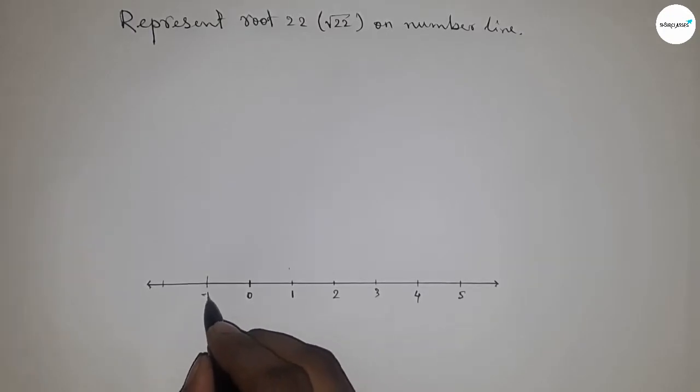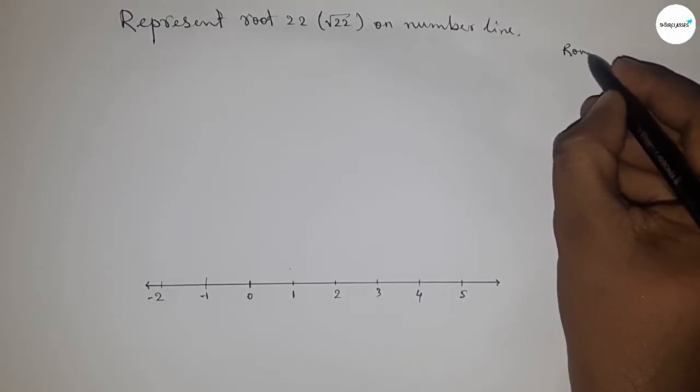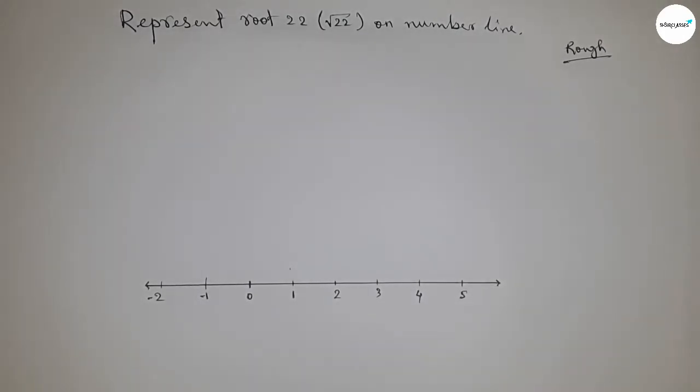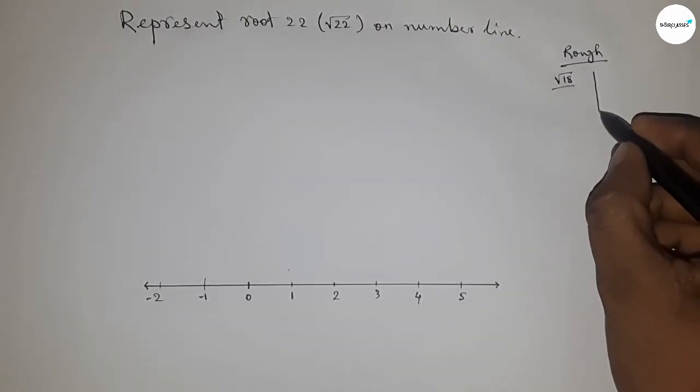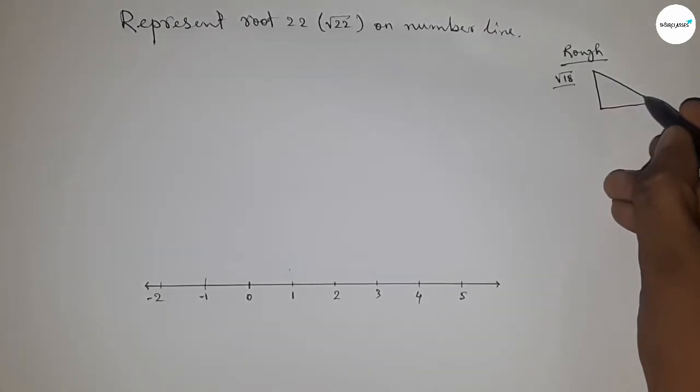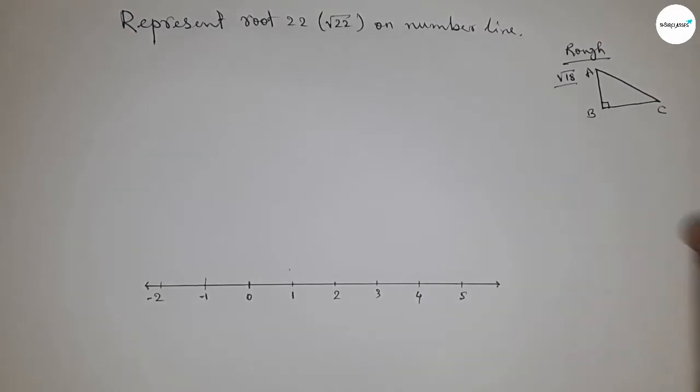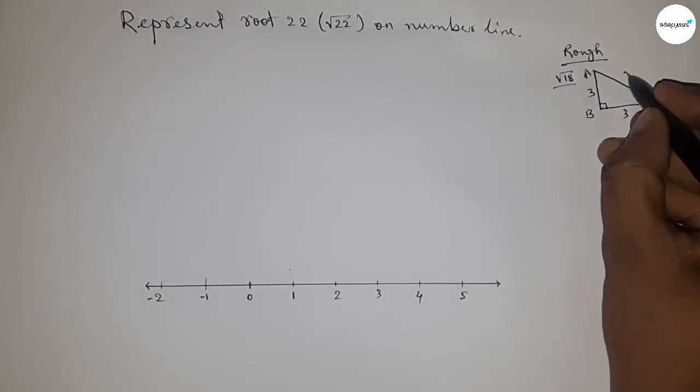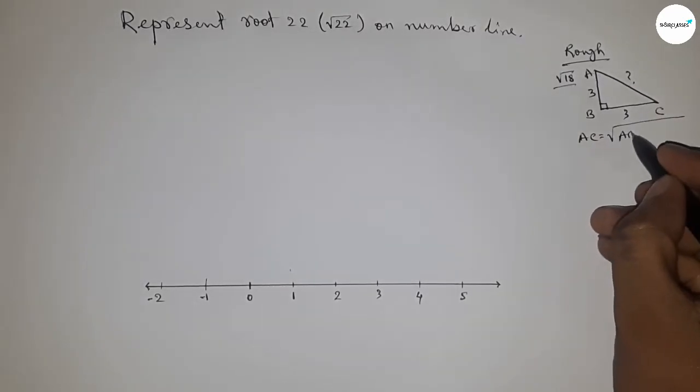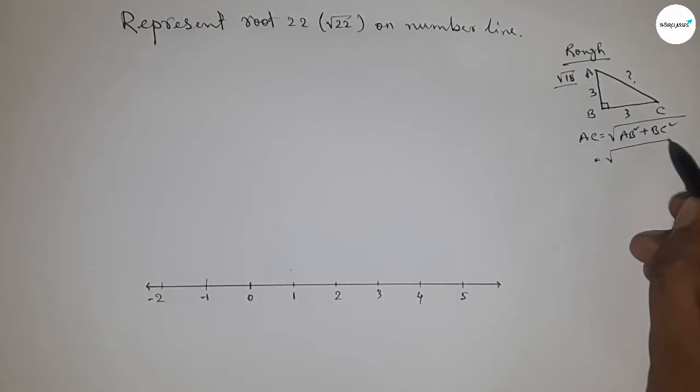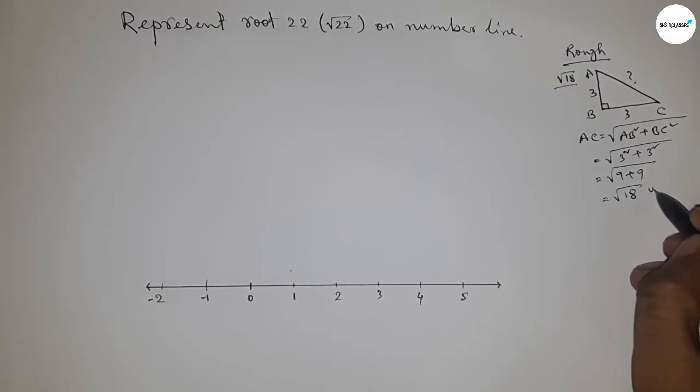Now, roughly discussing the concept of root 18 first. So first, if there is a right angle triangle ABC with base 3 and height 3, then what is hypotenuse? So hypotenuse AC equals, by Pythagoras theorem, height squared AB squared plus base BC squared. So now putting the value of height and base, this is 9 plus 9, so this is root 18 unit.